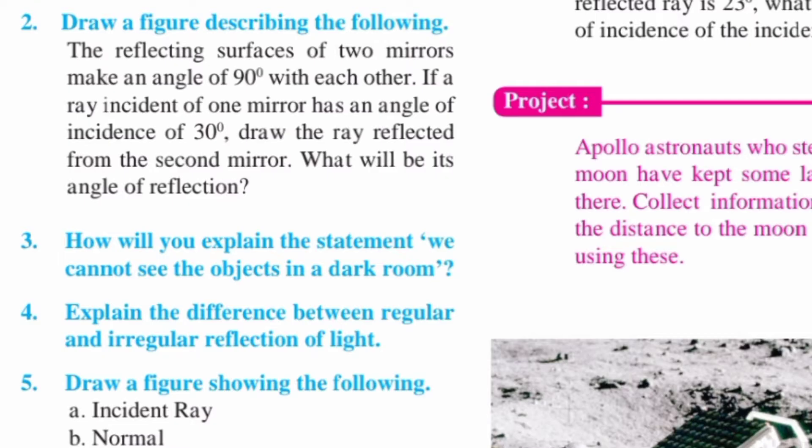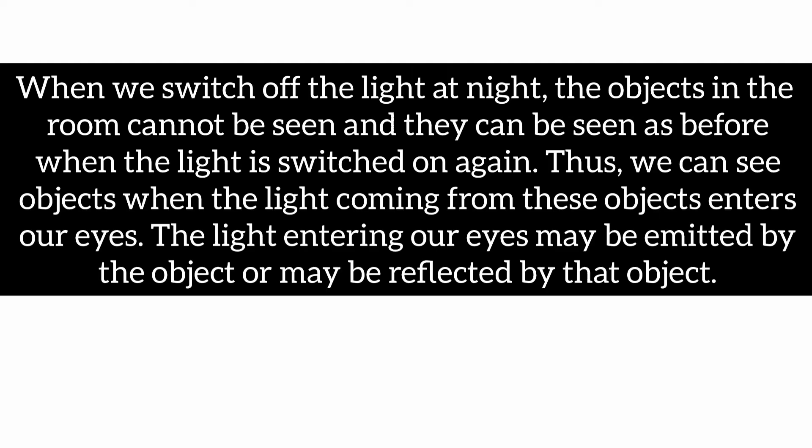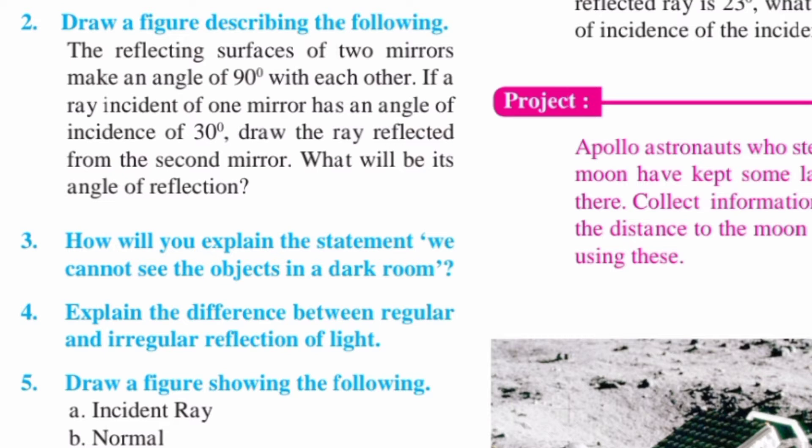Question three: how will you explain the statement 'we cannot see objects in a dark room'? Question four: explain the difference between regular and irregular reflection of light.